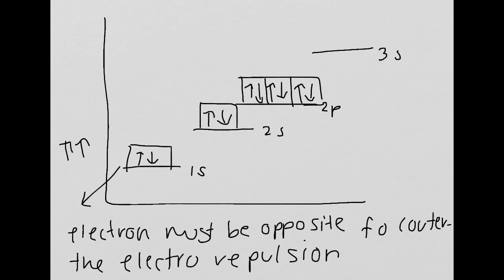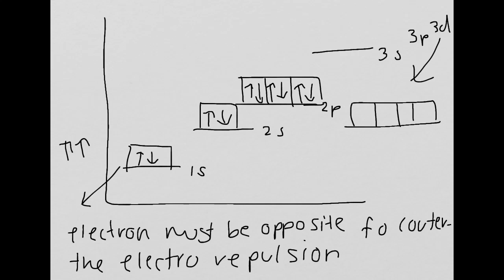The pattern carries on: then it would be 3S, then 3P, and then 3D. The 3D shell has five orbitals — one, two, three, four, five — and the electrons must all fill each orbital before they double up, as explained before.